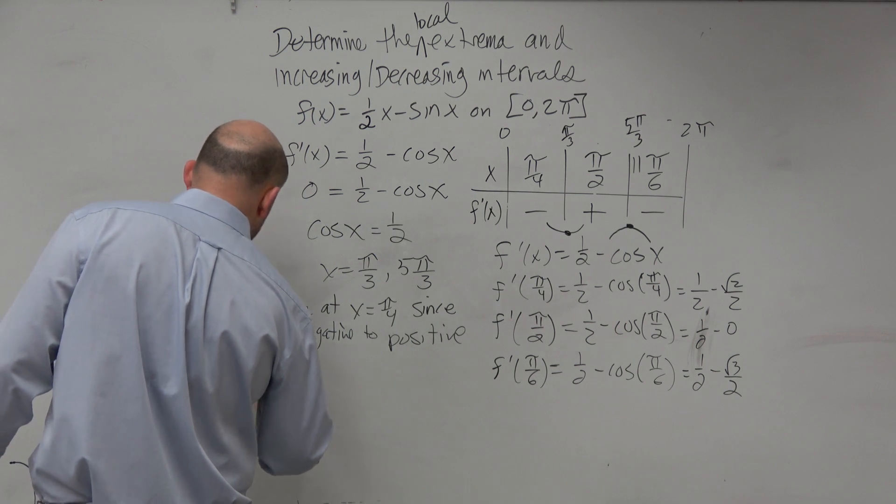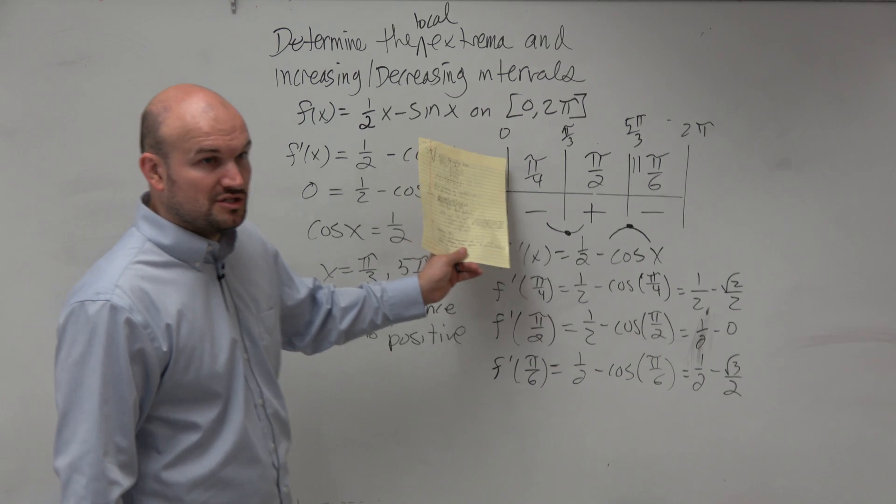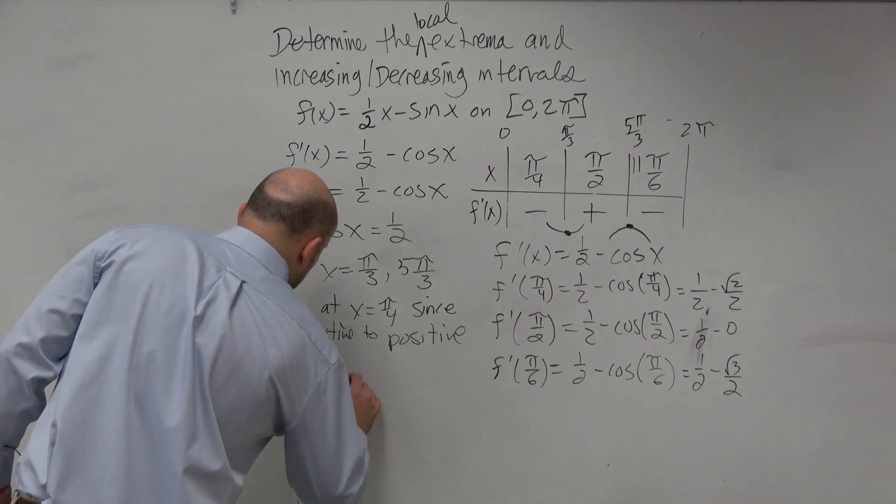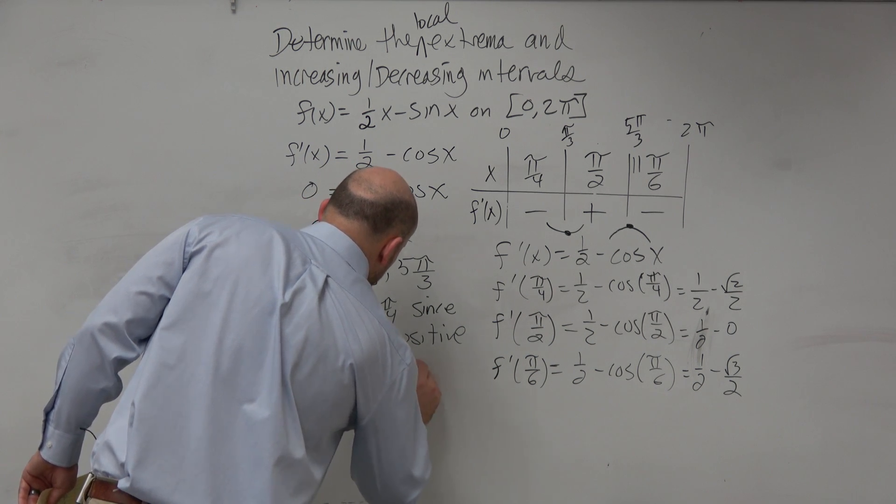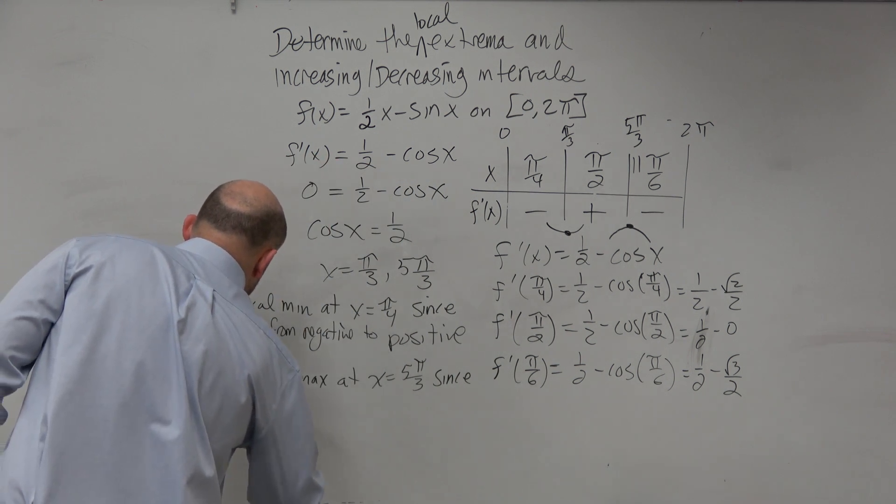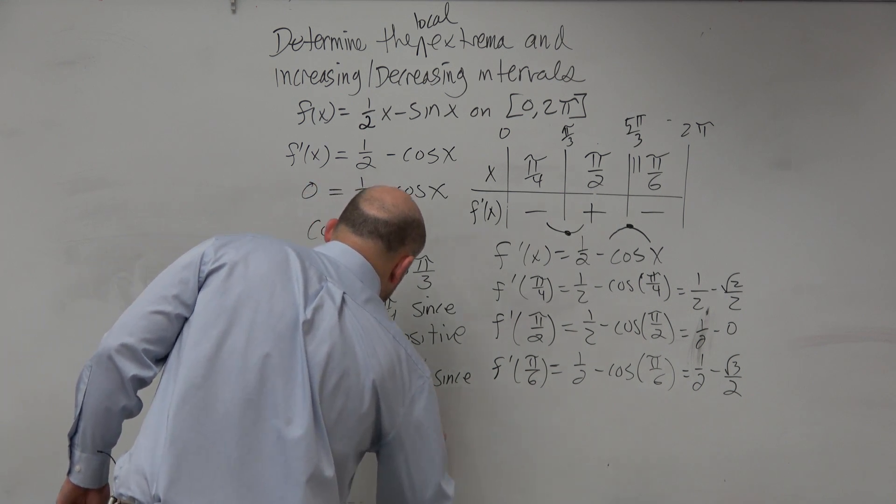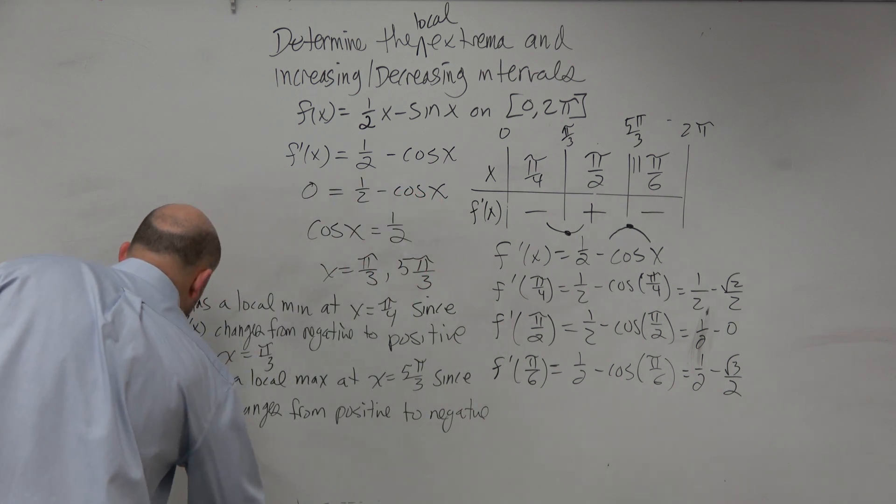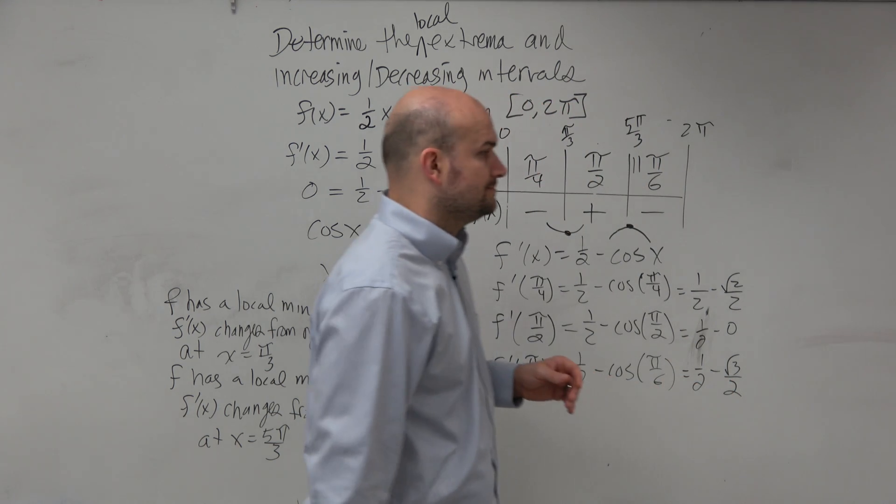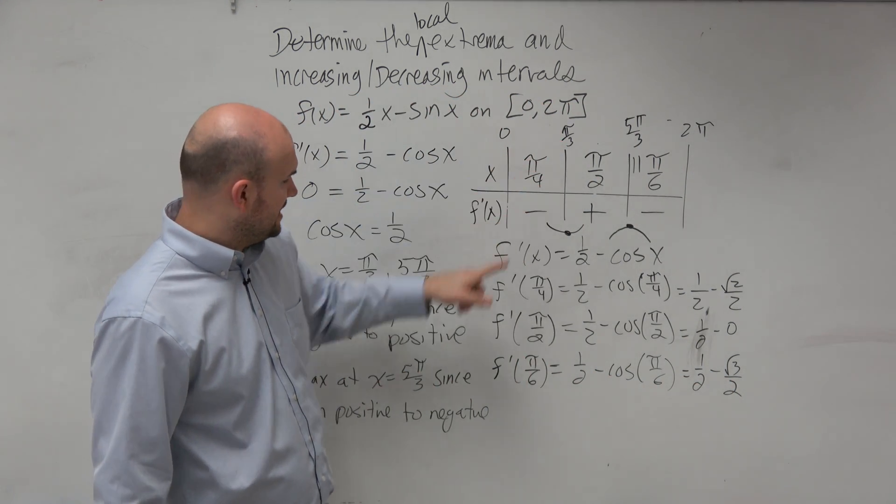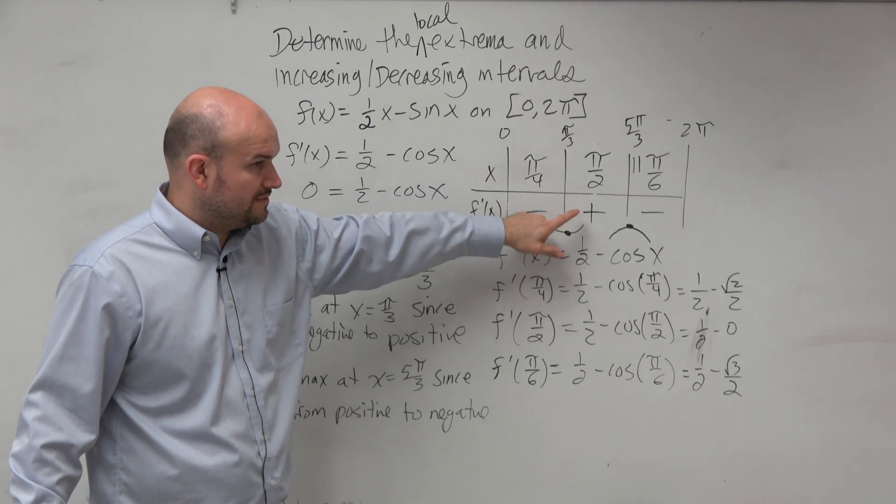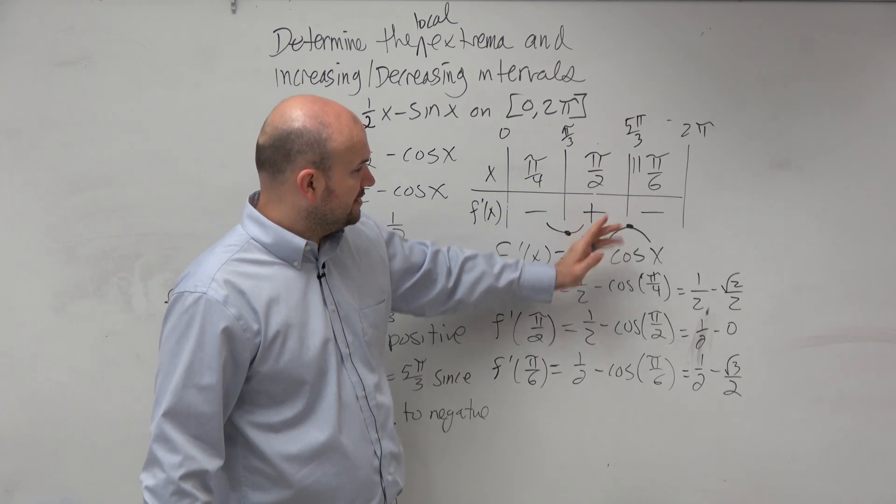And then we say the same thing about the max. So f has a local max at x equals 5π over 3. Since f prime of x changes from positive to negative at x equals 5π over 3. That has a local min at π over 3. I made a mistake. Local min at π over 3 because it's changing from negative to positive. And then it has a local max at 5π over 3 because it changes from positive to negative.